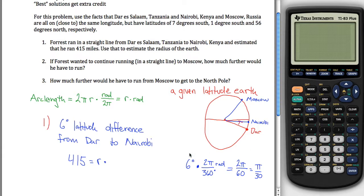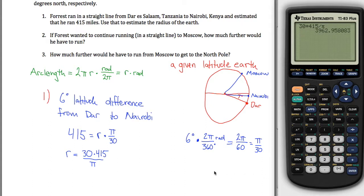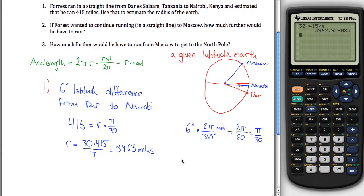So the number of radians from Nairobi to Dar is just pi over 30. So what we have is a formula or an equation that tells us the radius of the earth. The radius of the earth is just equal to 30 times 415 divided by pi, which is something we can use our calculator for. 30 times 415 divided by pi, and what you get is 3963 maybe we'll call it. This is 415 miles, so this is miles. In other words, estimate the radius of the earth. The radius of the earth is 3,963 miles. That turns out to be pretty damn accurate.